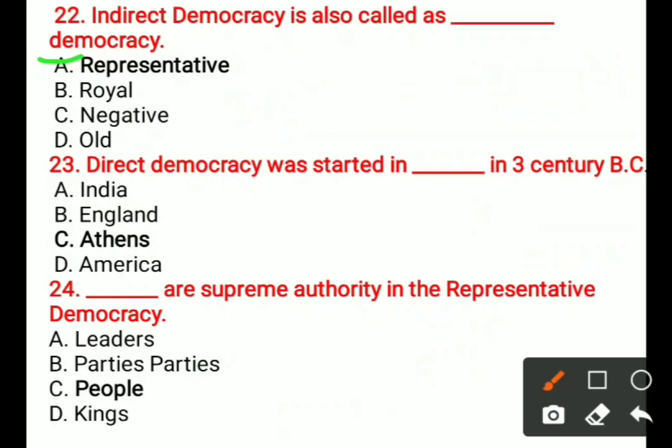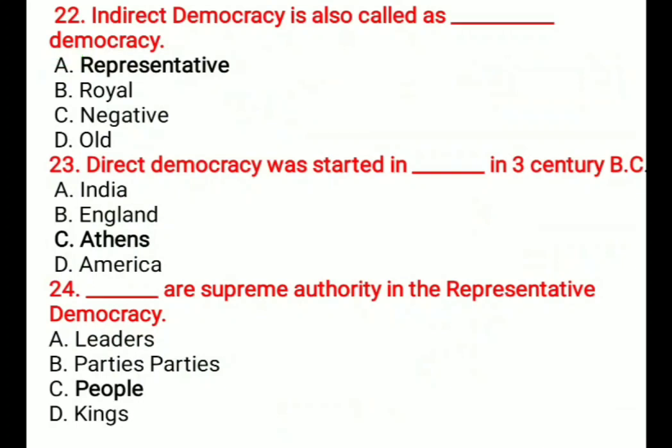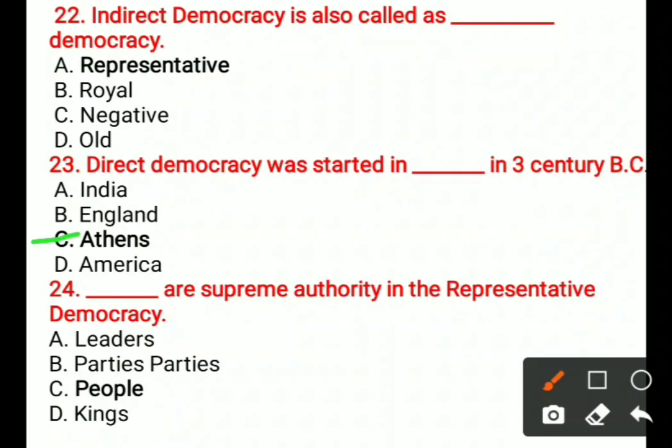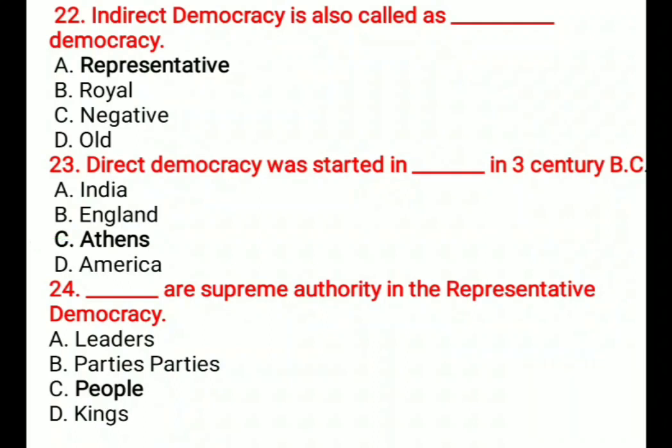Question 23: Direct democracy was started in the 3rd century BC in — A) India, B) England, C) Athens, D) America. The correct answer is C, Athens.